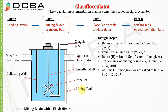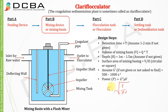Power P is equal to G'² × μ × V. This is derived from the formula G' = √(P / μV), so rearranging gives P = G'² × μ × V.